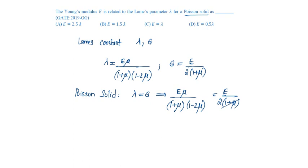(1 plus mu) gets cancelled, E gets cancelled, which gives 2 mu equals 1 minus 2 mu. Therefore 4 mu equals 1, from which mu equals 0.25.